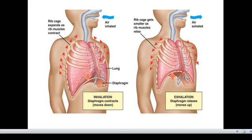The diaphragm is a dome-shaped structure, innervated by the phrenic nerve, which is formed from the cervical nerves C3, C4, and C5. It is also innervated by the lower intercostal muscles. The diaphragm is a skeletal muscle and is supplied with blood through the pericardiophrenic artery.